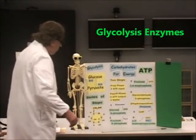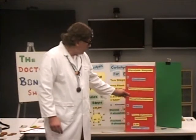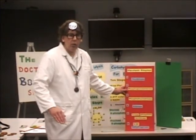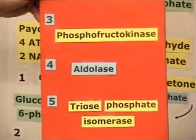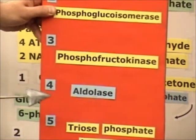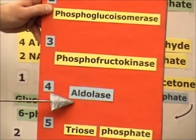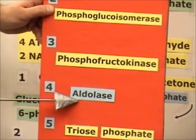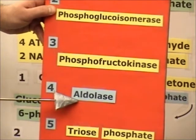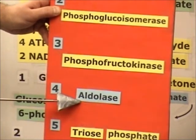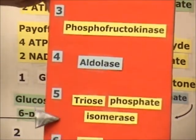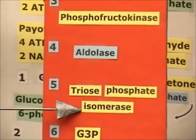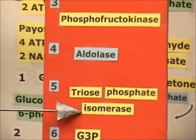Let's go back to the enzymes involved. We're on step 4. To cut the molecule we use something called an aldolase. An aldolase is going to be used to cut the molecule in half. In the fifth step, once you have glyceraldehyde 3-phosphate, we need another one — so we turn the dihydroxyacetone into glyceraldehyde 3-phosphate in step 5 with an isomerase. We rearrange so that we can get a G3P.